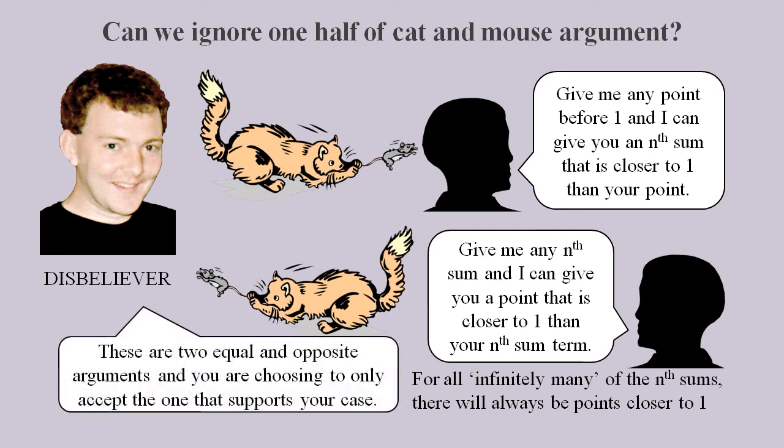So these are two equal and opposite arguments. One implies there can't be any points between them. And the other implies there must be points between them. You might think this shows that 0.9 recurring cannot be any fixed value and so it must be process related.